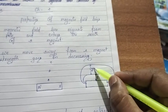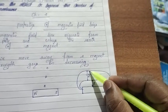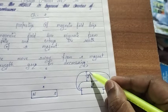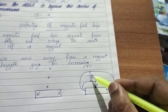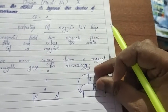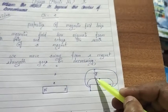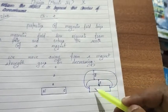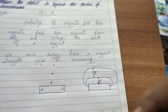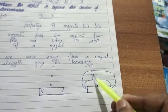The distance between two magnetic field lines increases as we move away from the magnet, because the strength of the field decreases. As we move farther from the magnet, the strength decreases, and we show this by drawing the magnetic field lines further apart from each other.